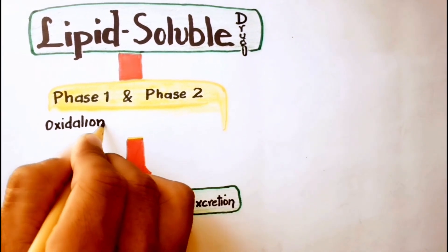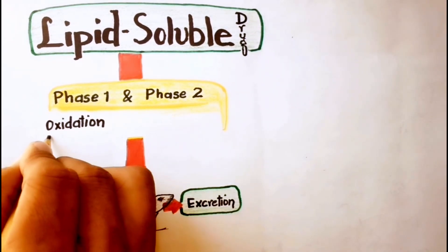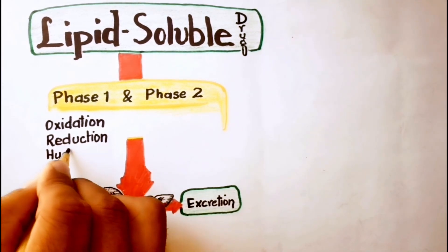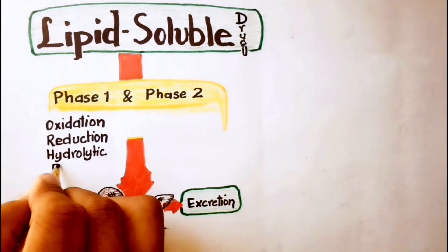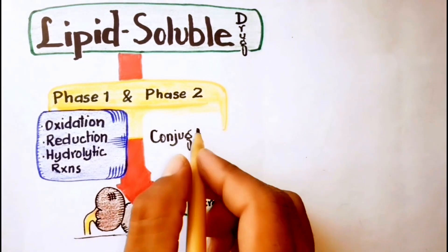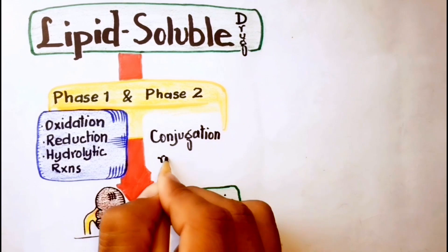Phase 1 reactions, in which the enzymes carry out oxidation, reduction, or hydrolytic reactions, and phase 2 reactions, in which enzymes form a conjugate of the substrate.